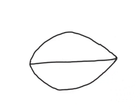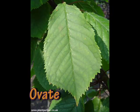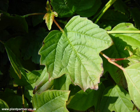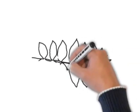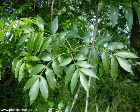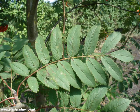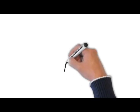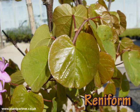Then we have the simple ovate leaf like a cherry, Prunus. And we have a lovely trilobed like a Viburnum, or it might be a Physocarpus. Then we have the pinnate leaf — think about things like the ash tree, which has a pinnate leaf, or it might be a Sorbus, one of the mountain ash types. Then there's the reniform one — think of it like the Cercis, the Judas tree.